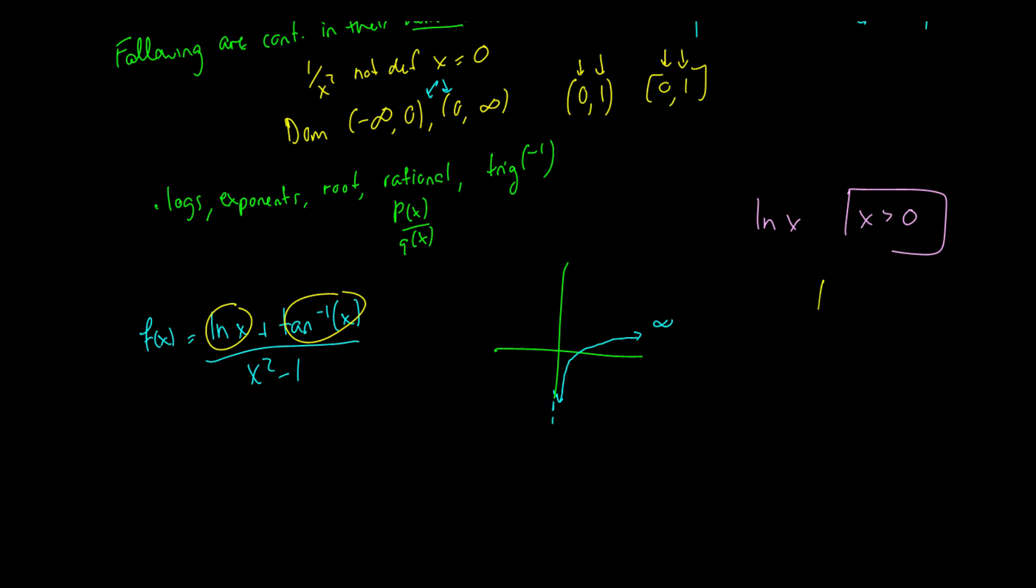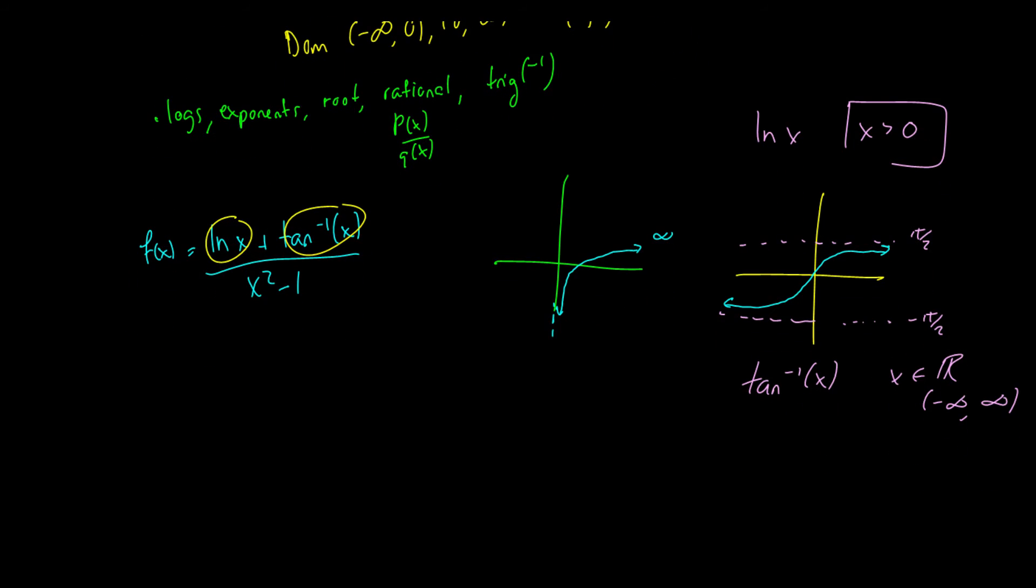And now we can take the graph of the arctan of x which you might not memorize or know yet but it is very good to memorize this function. So it has horizontal asymptotes which means it never quite reaches these points at negative pi over 2 and pi over 2. So really it's the whole domain. So if we take the arctan of x then we say that x is just in the real universe which means all numbers which I'll signify as negative infinity to infinity. So because we know that ln(x) is x greater than zero and tan of x is the whole thing, then we can say that the numerator has a domain or is continuous for x greater than zero. So we can also write this as (0, infinity).